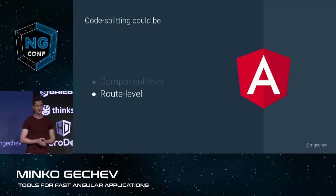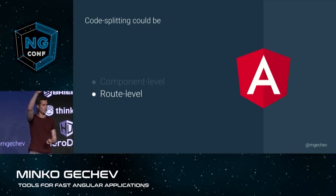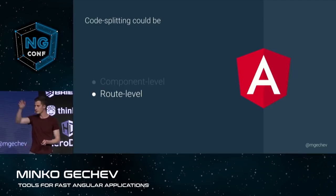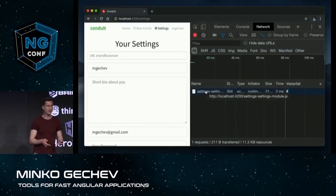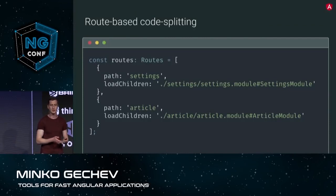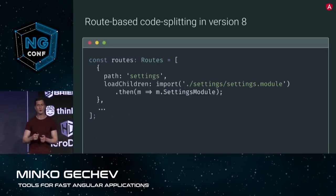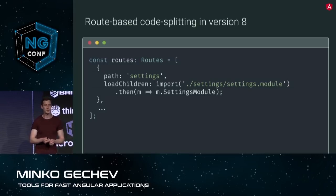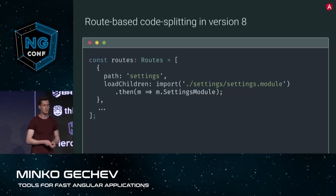Route-level code splitting is something that I hope pretty much everyone is already doing. How many of you are using route-level code splitting with the Angular router? I hope to encourage you to use it even further, because this is probably the most efficient way to shrink your bundles. We can already use this in Angular by using the load children syntax — the load children property in the route declaration. In version 8, we want to take advantage of modern standards, so we enabled dynamic imports, which let you do pretty much the same thing using the ECMAScript 2015 module syntax.